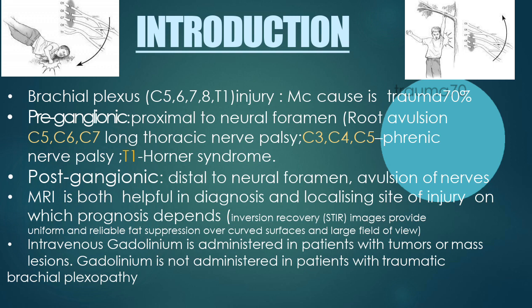Here comes the role of radiology. MRI is the best modality for diagnosing and localizing the site of injury in brachial plexopathy, because localization — whether preganglionic or postganglionic — determines the prognosis and management. Out of all MRI sequences, the STIR (short inversion recovery) sequence is the best for diagnosis and localization. As far as contrast is concerned, intravenous gadolinium is administered in patients with brachial plexopathy due to tumors and masses, but gadolinium is not generally administered in traumatic brachial plexopathy.